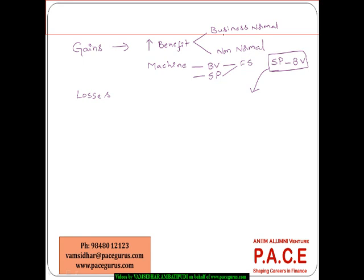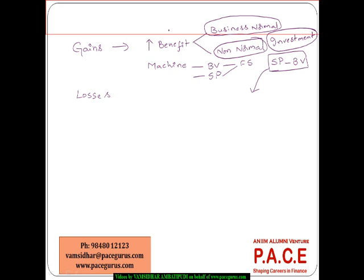Selling a machine is a gain from normal business operations since the machine was used to run the business. Whereas if I bought shares of some company purely to exploit a pricing mismatch and then sold them, whatever profit I made is a gain but not from normal business operations. If a gain is from normal business operations, it is treated as an operating gain; if non-normal, it is treated as a non-operating gain.